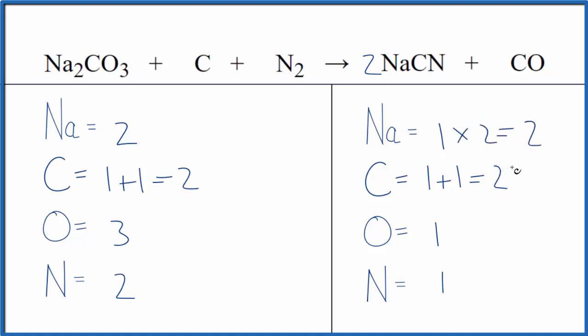Then for the carbon, let's update that. Two times the one. That's two plus the one here. So we have three carbon atoms and then two times one, two nitrogens. So the nitrogens are balanced.